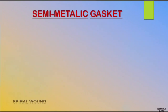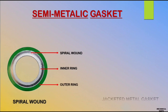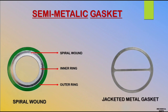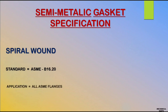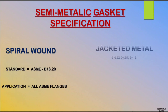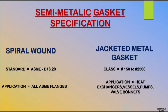Next we'll move to semi-metallic gasket. Semi-metallic gasket has two types only. First is spiral wound gasket — it has an inner ring, outer ring, and spiral wound winding. Standard is ASME B16.20, and it can be used on all types of ASME flanges. Second is jacketed metal gasket — all exchanger gaskets like bundle gasket and channel gasket are jacketed metal gasket type, usable from 150 class to 2500 class. Please keep in mind: jacketed metal gasket and corrugated metal gasket are different, but both applications are similar.